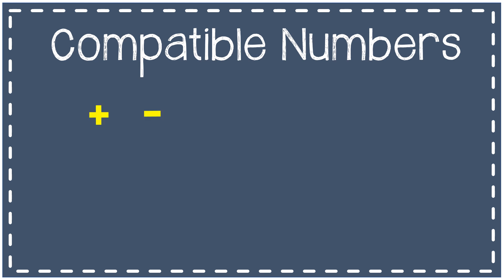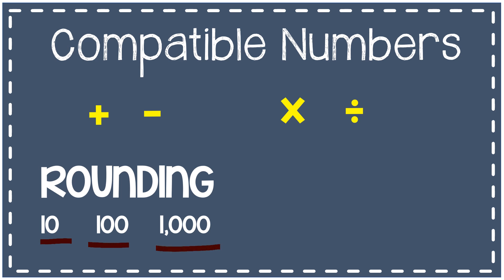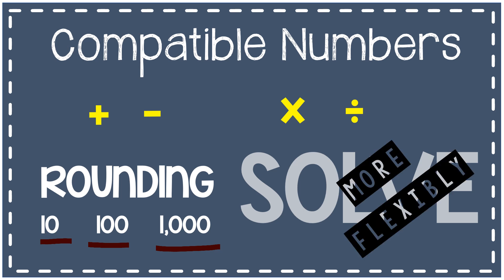We've talked about addition and subtraction using compatible numbers, and next I'm going to talk about using multiplication and division with compatible numbers to solve. Remember, you have to round — by the tens, hundreds, and thousands place — so that you can solve much more flexibly. Rounding those numbers is what compatible numbers are all about.